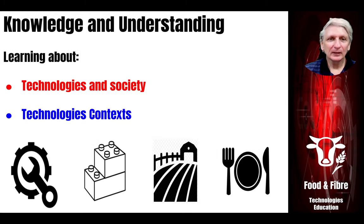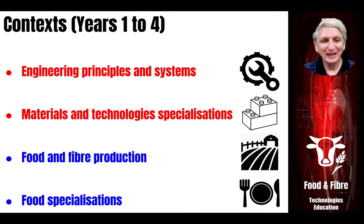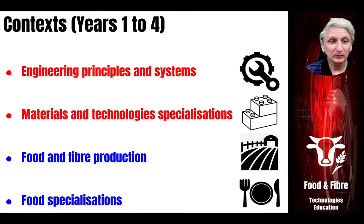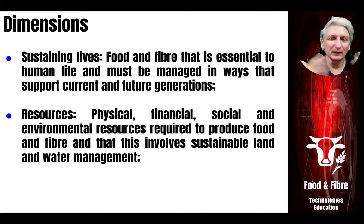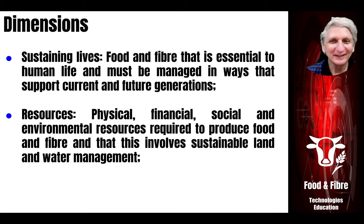There are two aspects of design and technology: technologies and society, and technologies context. Food and fibre production and food specialisations are done as a combined context in years one to four and also in years five and six. In primary years they're all done together — there's just one context but we have this hyphenated name for it. There are a number of things that students need to learn in their learning about food and fibre production and the food specialisations.